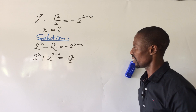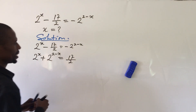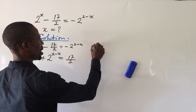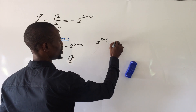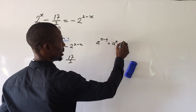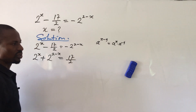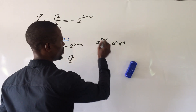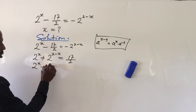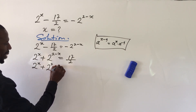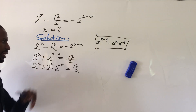Now we rewrite the expression using the law of indices. The law states that a to the power of (x minus y) equals a^x times a^(-y). Applying this rule, we rewrite 2^(2-x) as 2^2 times 2^(-x). So our equation becomes: 2^x plus 2^2 dot 2^(-x) equals 17 over 2.